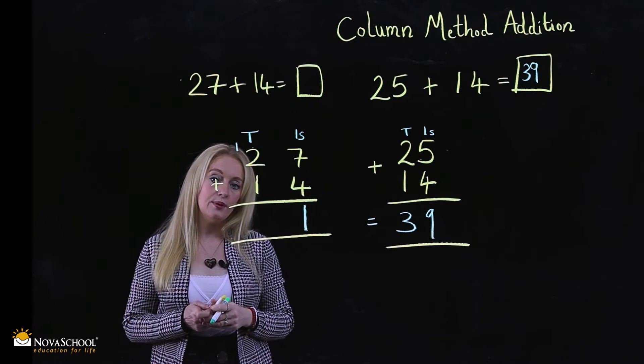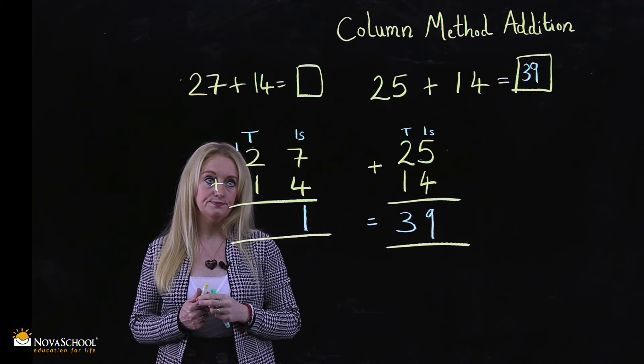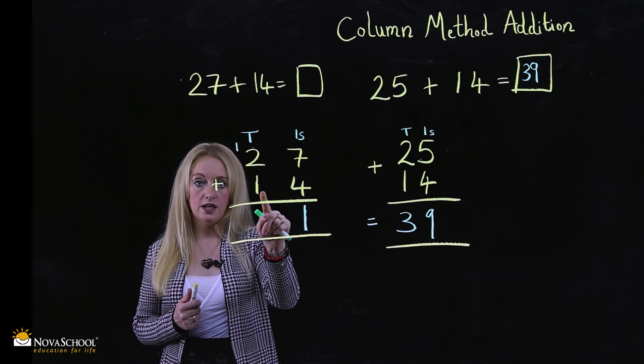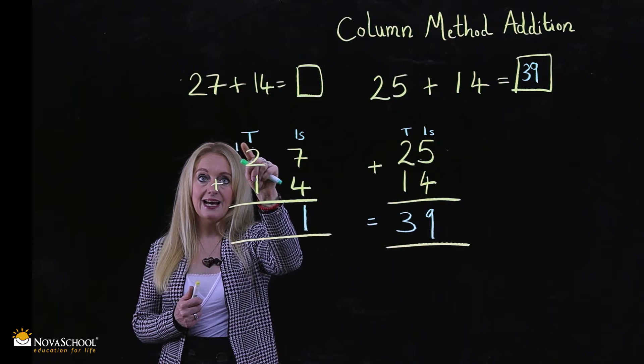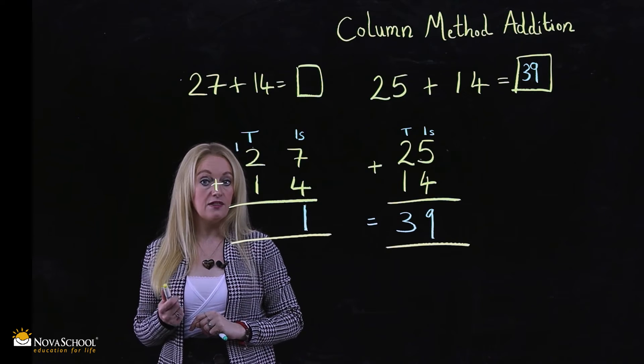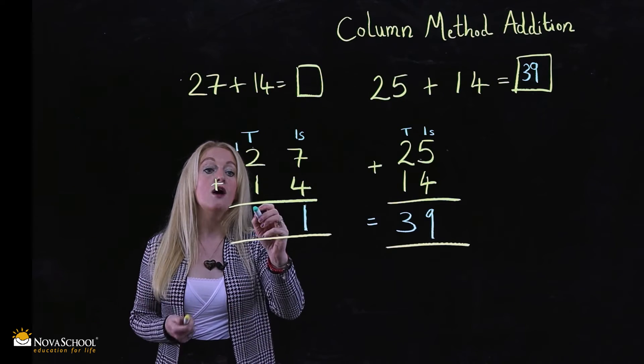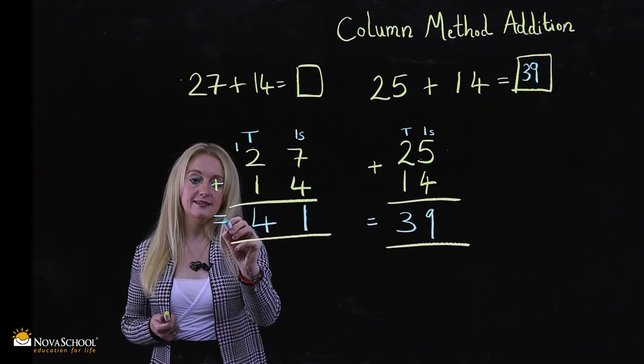So we now have an extra 10 there. So we look at the tens column. One add two is three, add your extra 10, making the four to make 41. Final answer.